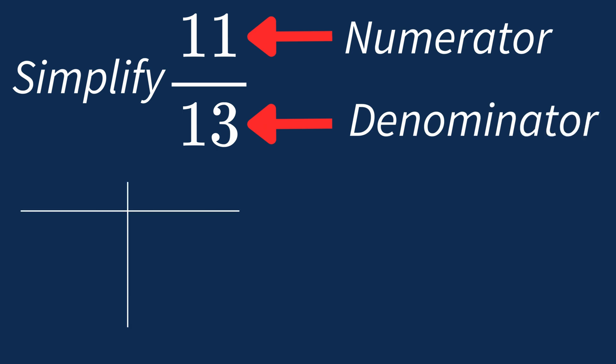First, let's list out the factors for each. For 11, the factors are 1 and 11. For 13, the factors are 1 and 13.